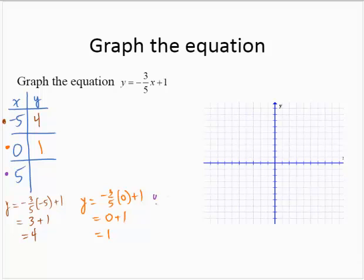Choosing 5 for x, y would equal negative 3/5 of 5 plus 1. That's negative 3 plus 1, which is negative 2. Plotting those points on the axis, assuming a scale of 1 on each axis: negative 5, 4; 0, 1; and 5, negative 2. These points appear to be collinear, so I will draw the line through the points.